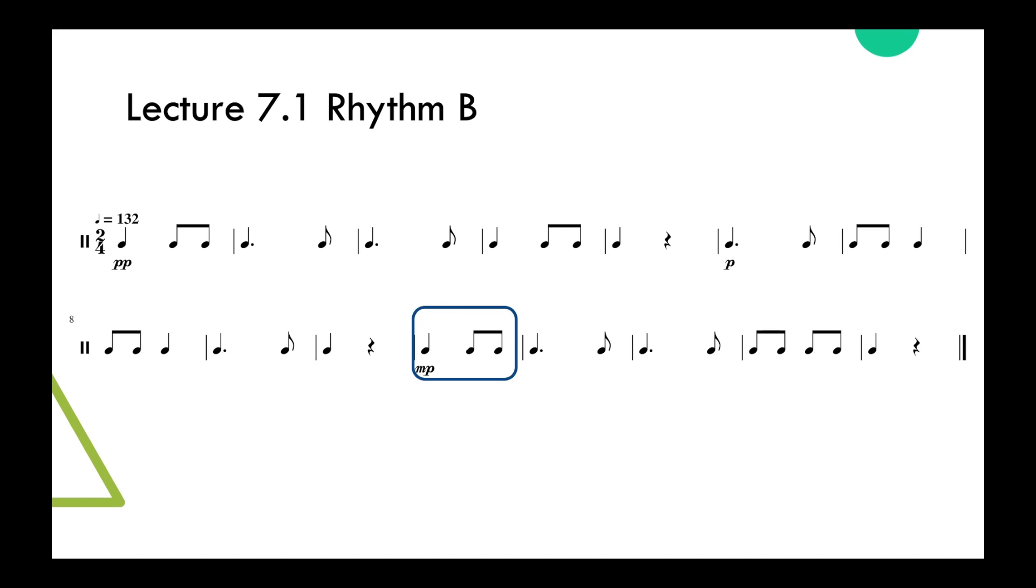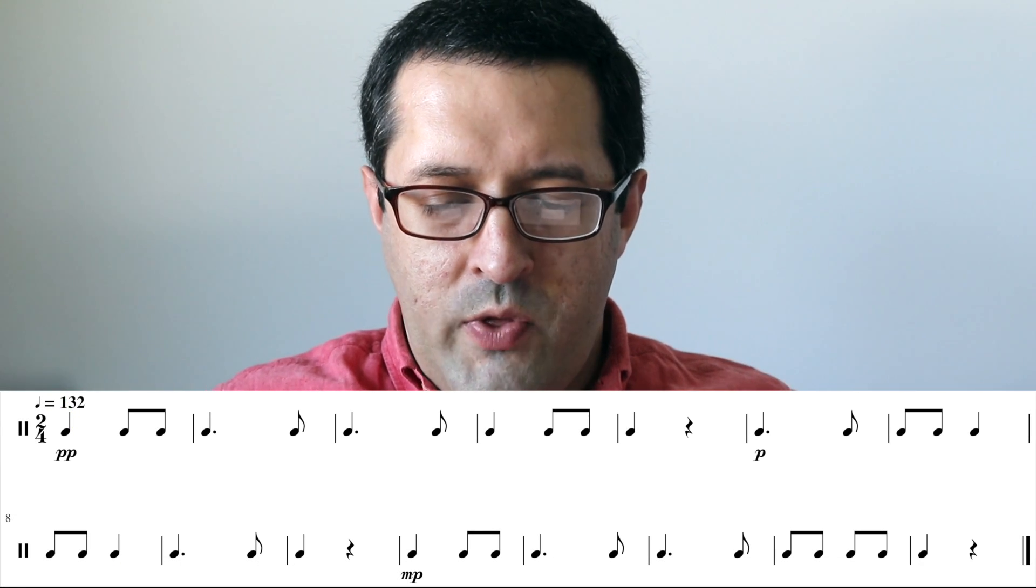Next measure, measure nine, there's the new element the dotted quarter plus an eighth note and then quarter note quarter rest. Next bar we're at mezzo piano, quarter note two eighth notes, then look here we've got our same dotted quarter plus an eighth note element. Same thing dotted quarter plus an eighth. Two quarter note, two eighth notes and two eighth notes, and then we got a quarter note and a quarter rest. All right so now we're ready to give this one a try, it goes, this one's 132.